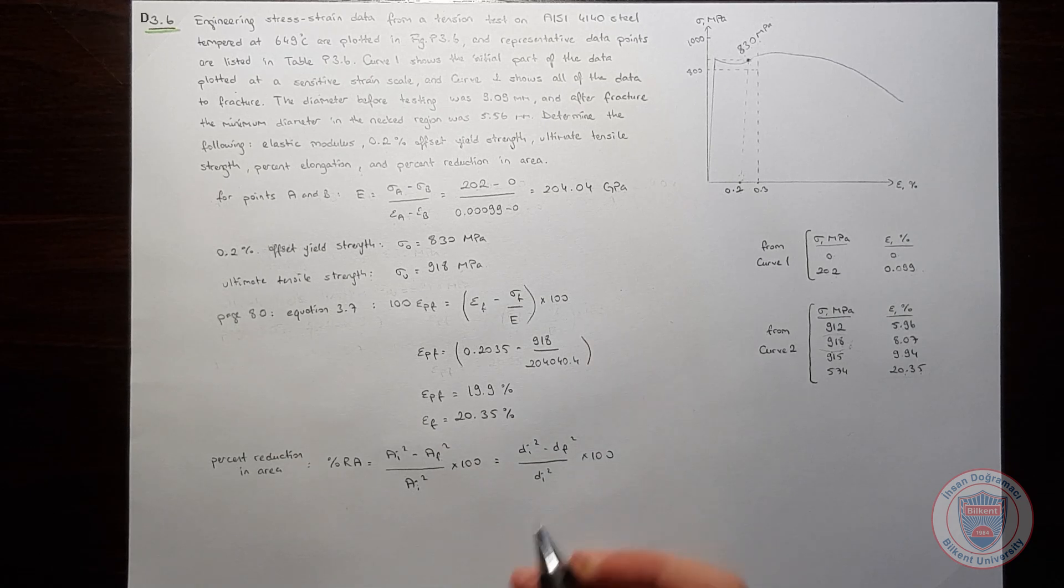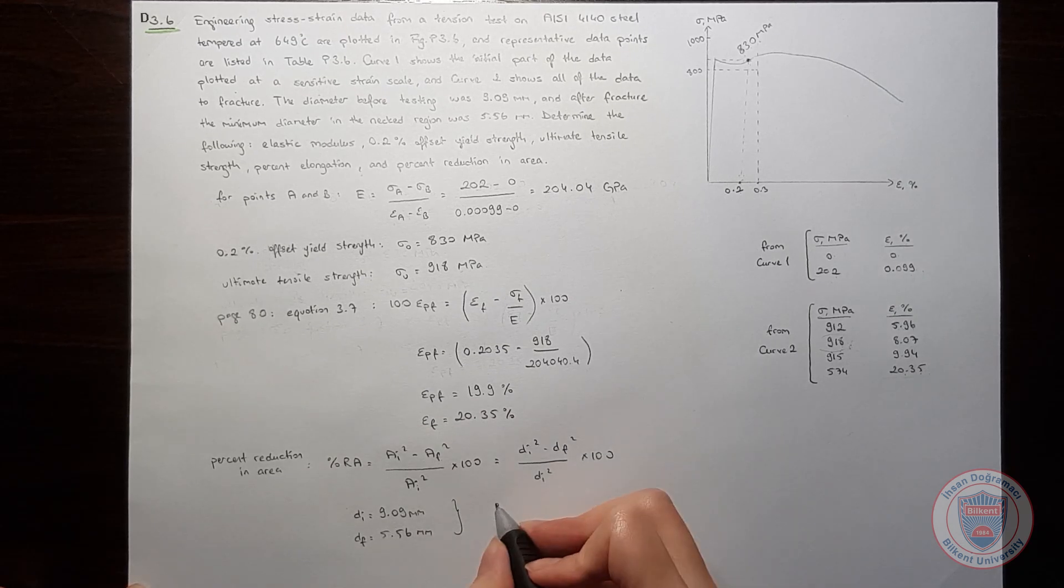We know that the initial diameter is 9.09 millimeters and the final diameter is 5.56 millimeters. Let's substitute these values into the equation.